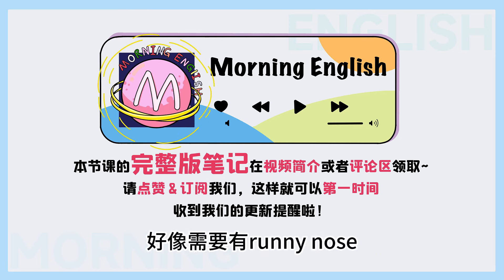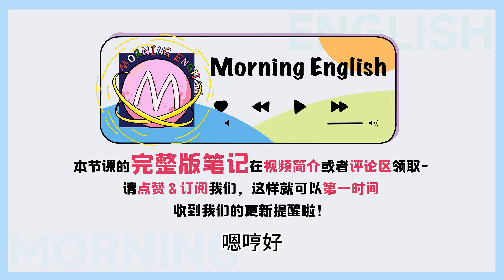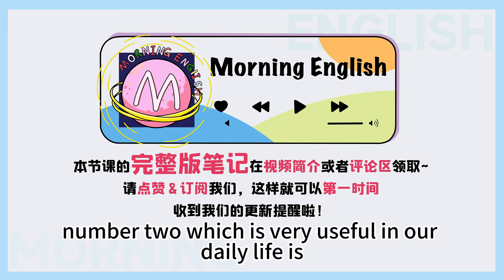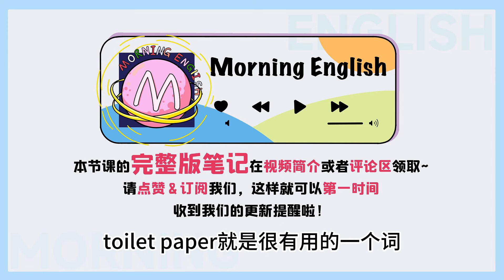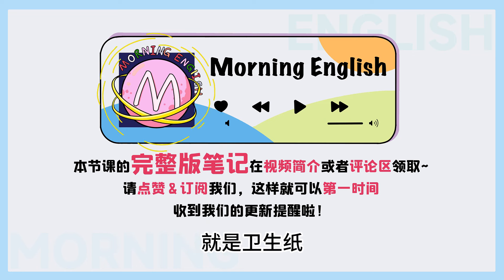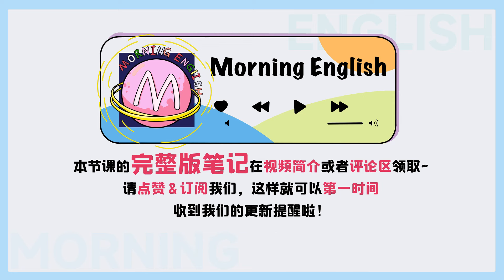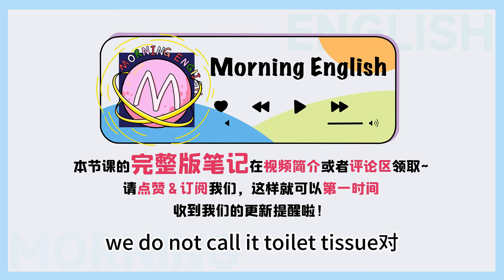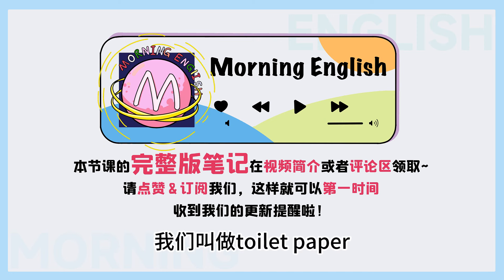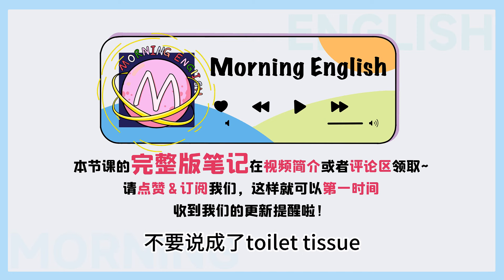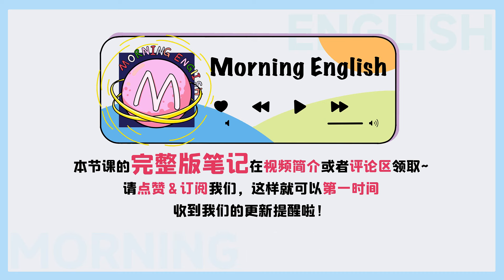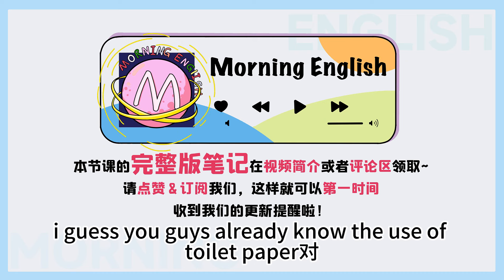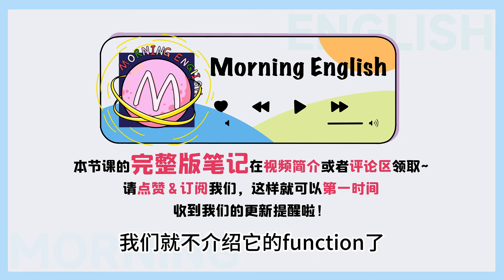Number two, which is very useful in our daily life, is toilet paper — 就是卫生纸, 或者是卷纸。But we call it toilet paper; we do not call it toilet tissue. 注意了, 这个卫生纸我们叫做toilet paper, 不要说成了toilet tissue. 'They have a sale on toilet paper today!' — 就是他们的卫生纸正在打折。